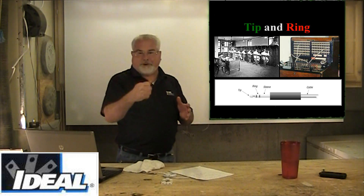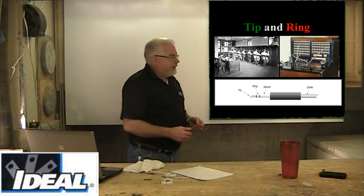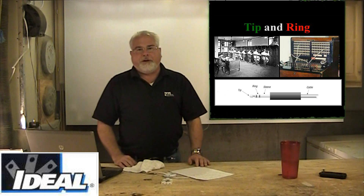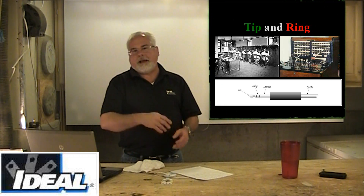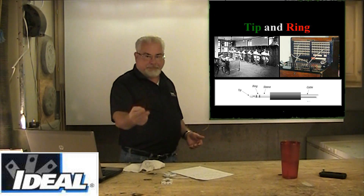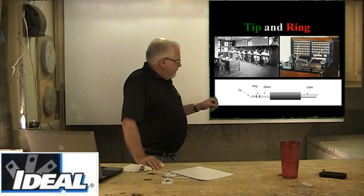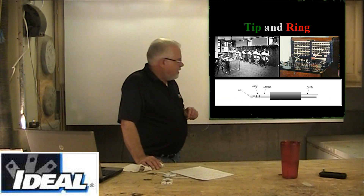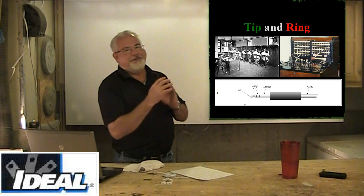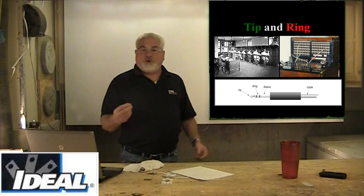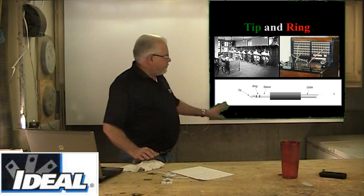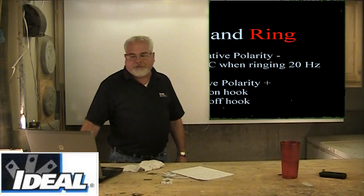Back in the day we always had to go through an operator to make a call. In old movies you'll see people cranking a handle on the side of a phone — that generated a light on the operator's switchboard. They would take their headset plug and plug it into that opening, then they could hook you up with whoever you were trying to call. One wire going to the house is connected to the very tip of the connector; the second conductor is hooked to what we call the insulated ring. The sleeve was the ground — that's where the term tip and ring actually came from.